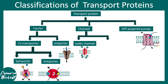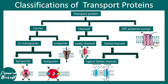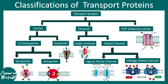Among channels, there are leaky channels which are transiently open almost all the time, so ions can literally leak through them. These channels are present in neurons. Gated channels are pretty common in the nervous system. Gated channels include ligand-gated channels, which open only when a ligand binds — that's the password. There are also voltage-gated channels, which open when a certain voltage is attained. This is the overall classification of transport proteins.